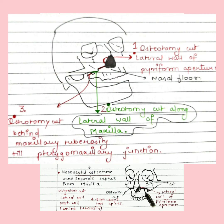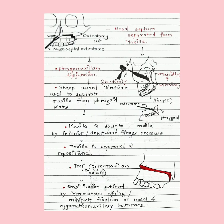After giving these osteotomy cuts, nasal septal osteotomy is used to separate the nasal septum from maxilla. After this separation, pterygomaxillary disjunction is carried out with the help of a sharp curved osteotome.